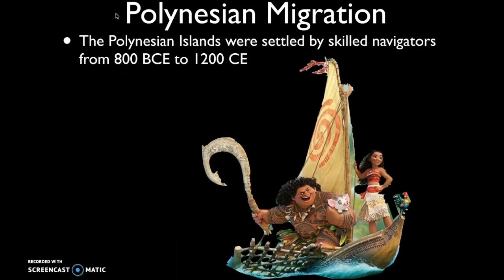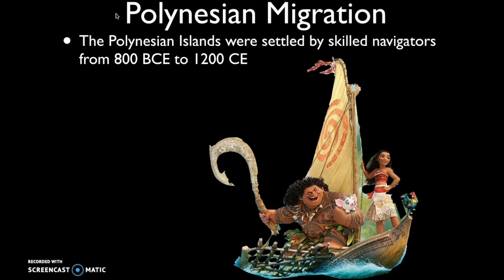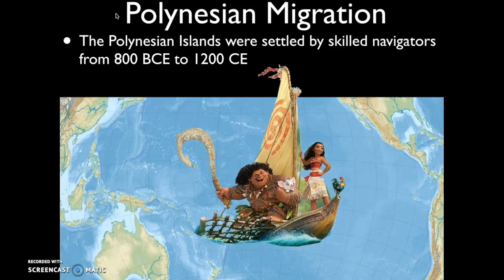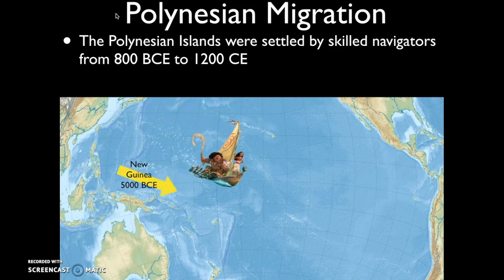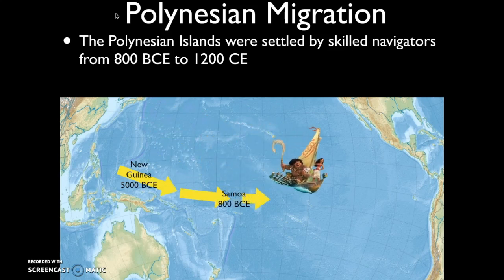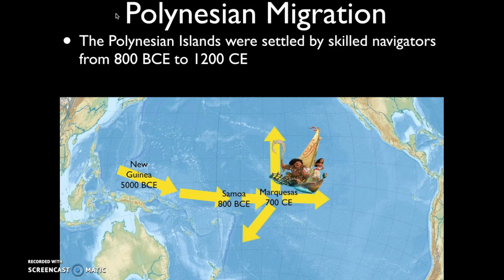That's the Bantu migration. Now the Polynesian migration — another really important migration in AP World History. For many of you who've hopefully watched the movie Moana, you're familiar with Polynesian migrations. The Polynesian islands were settled by skilled navigators from around 800 BCE to 1200 CE. The Polynesians were the most advanced maritime society of their day, far surpassing the Vikings. They had these advanced canoe boats called Te Pukes, which they used to seek out and find islands literally in the middle of the Pacific Ocean.